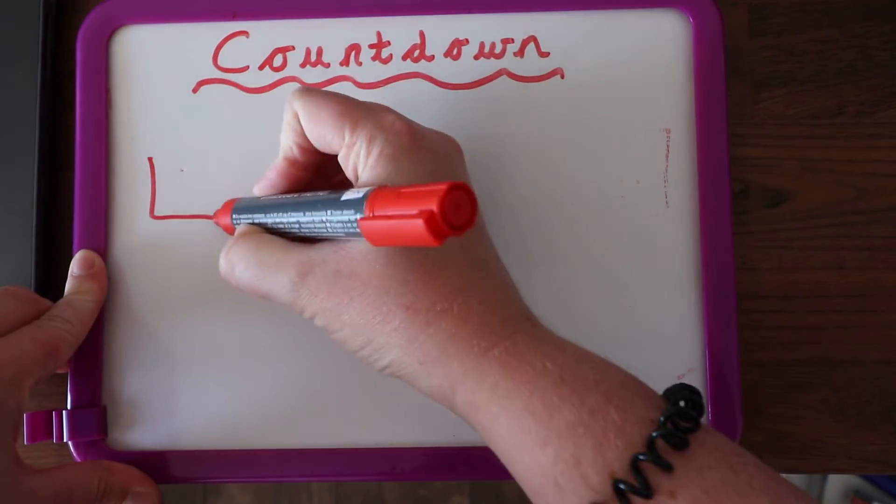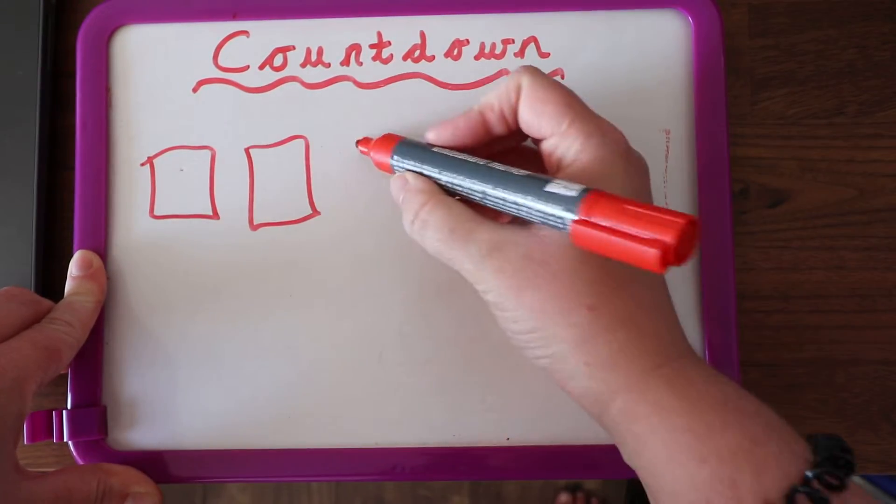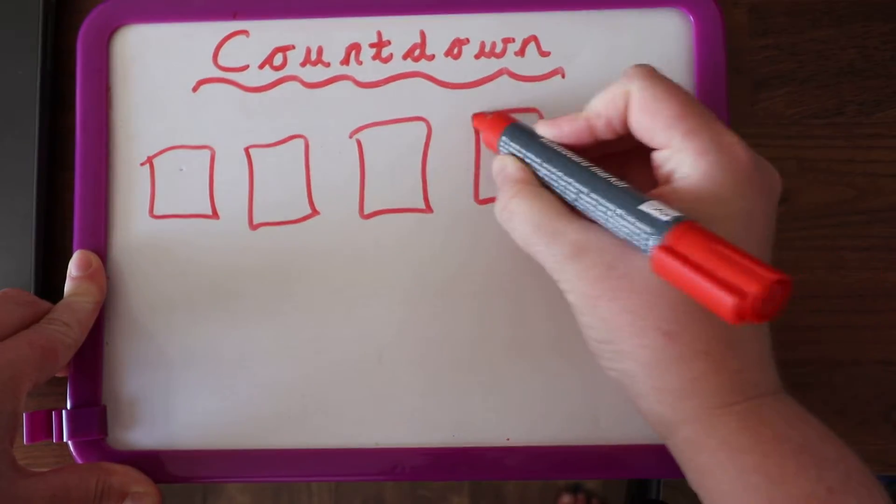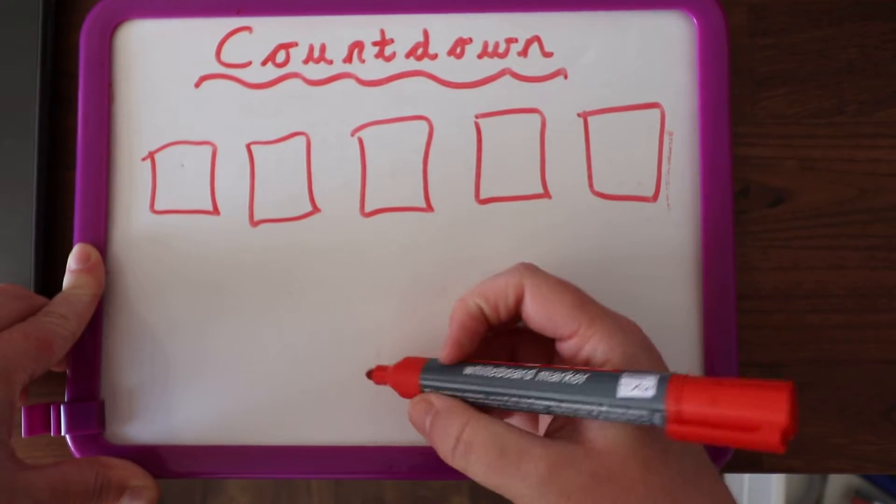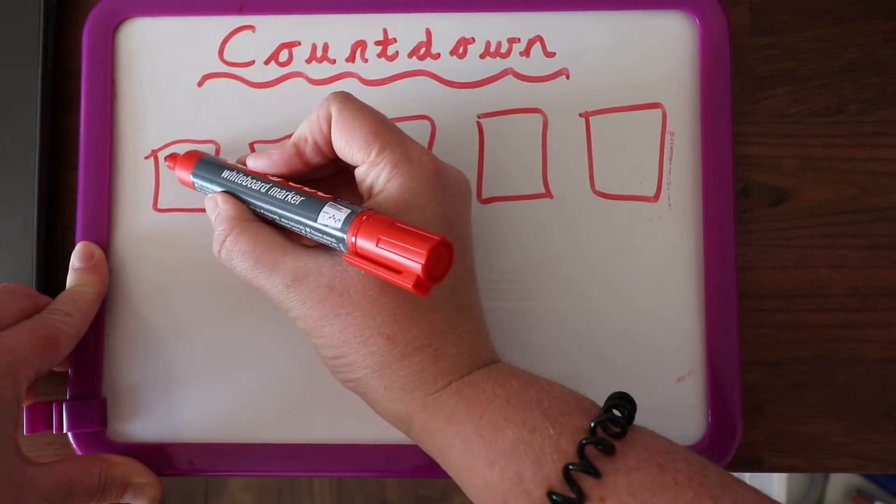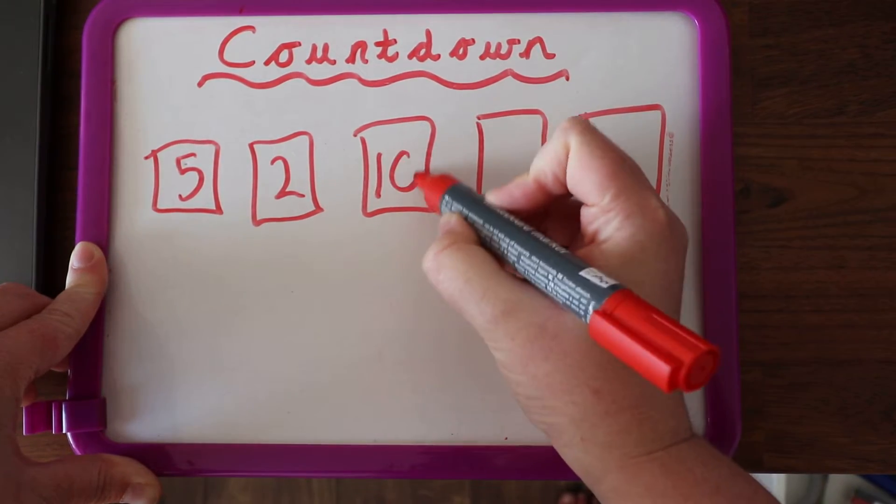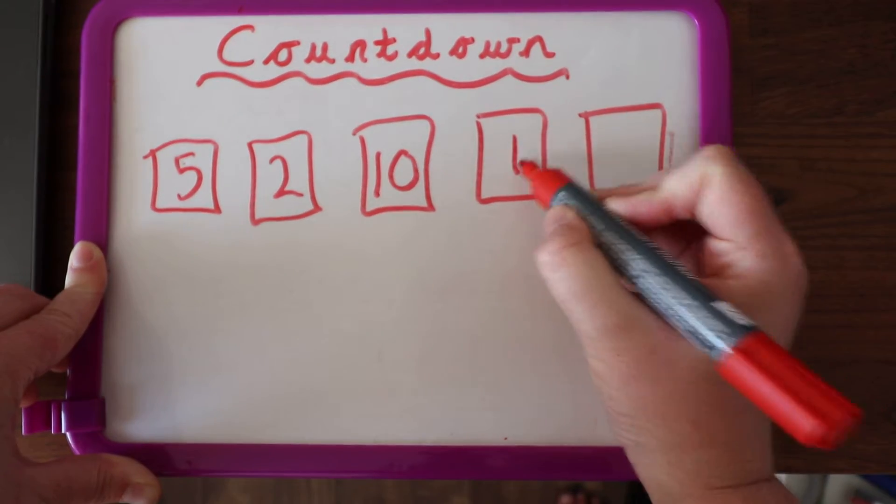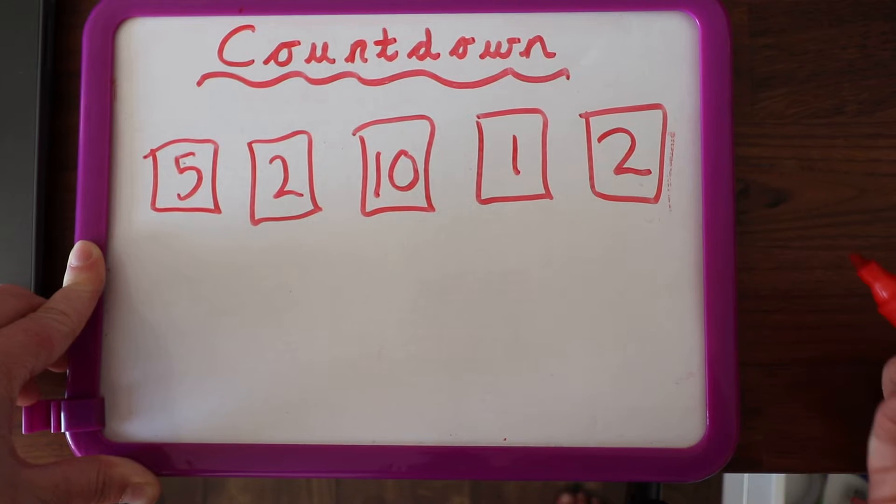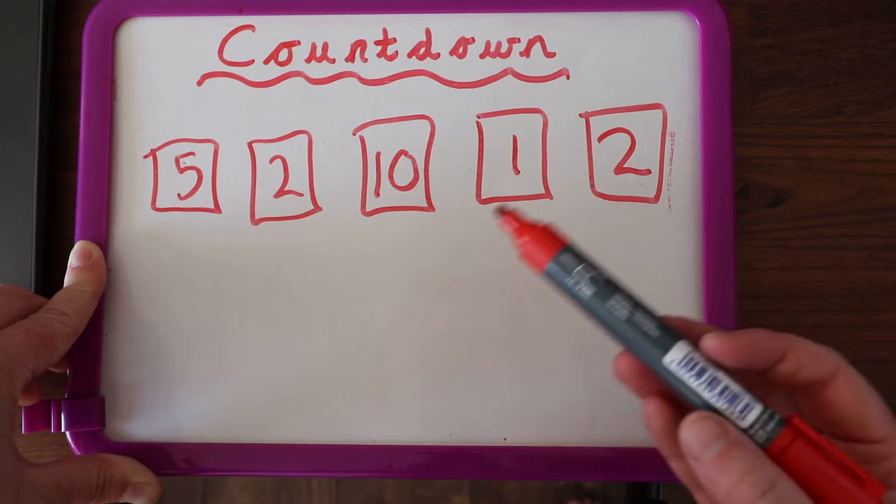The next one is going to be five numbers again. Get your number squares ready. We are going to have 5, 2, 10, 1, and 2.